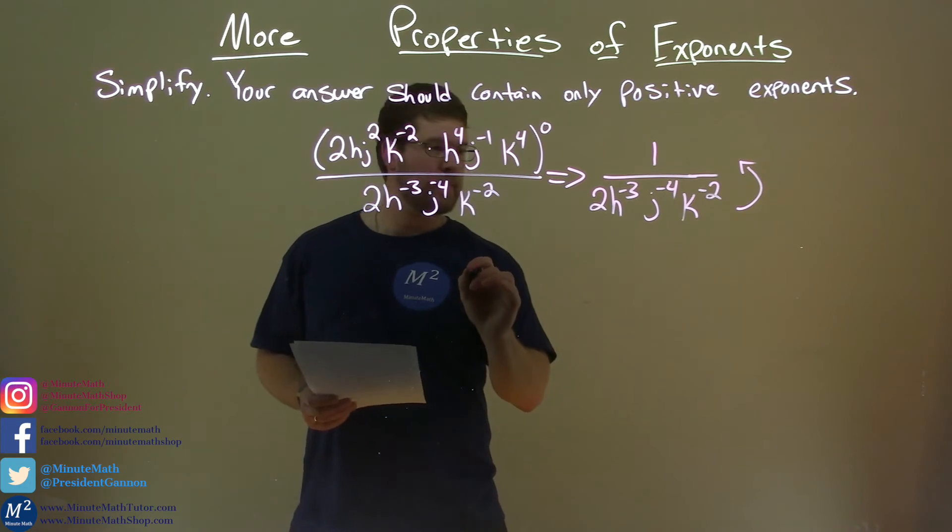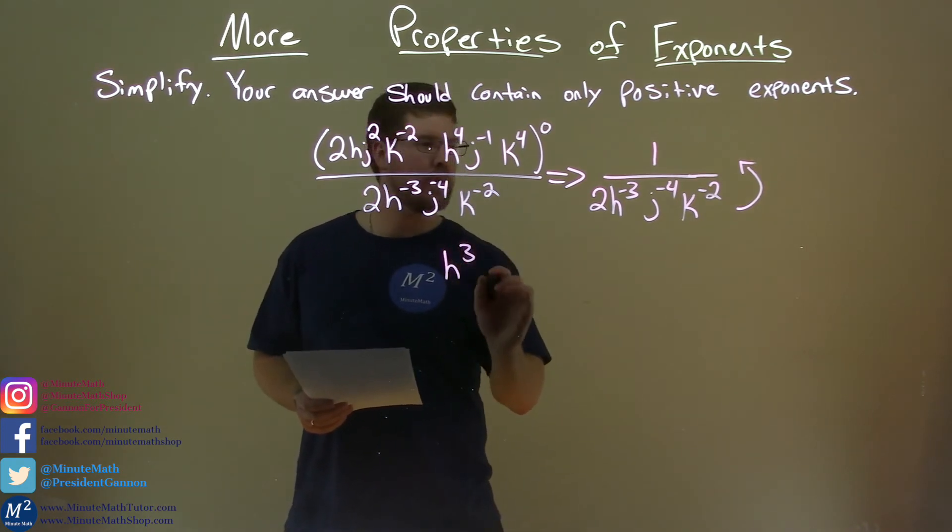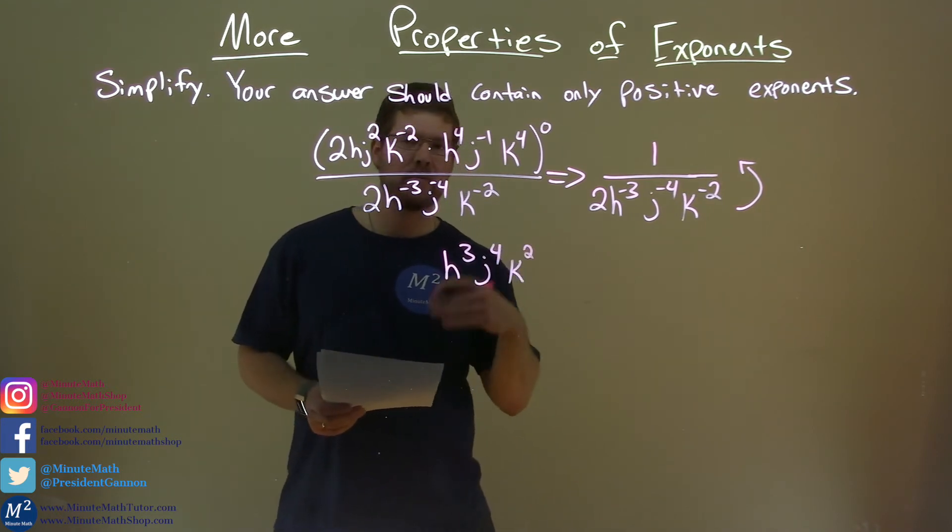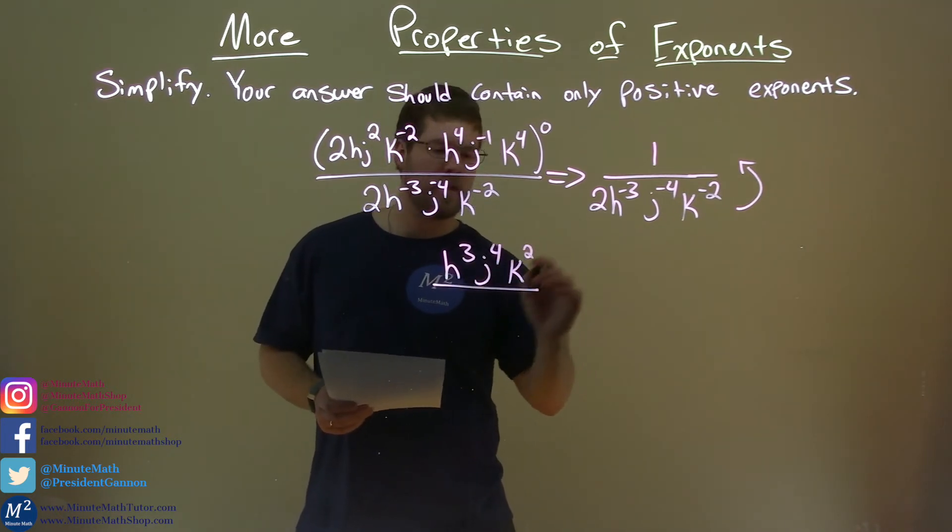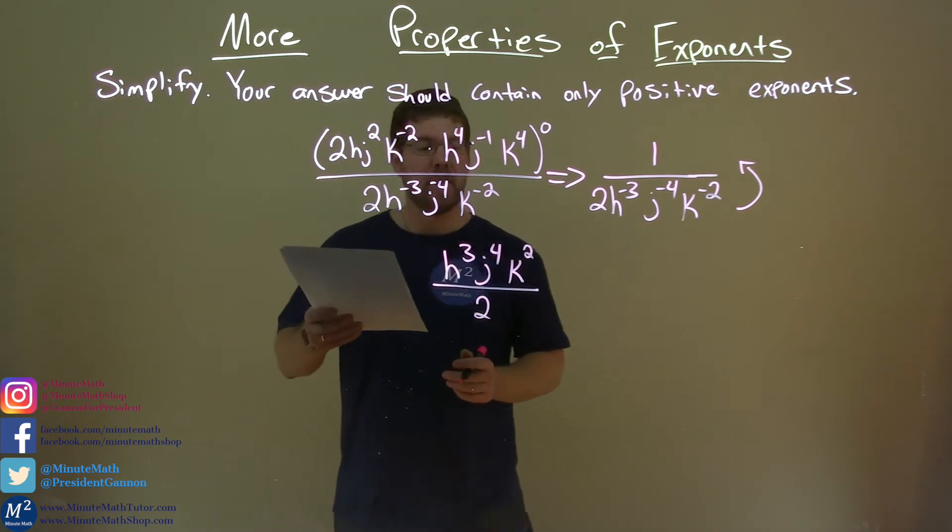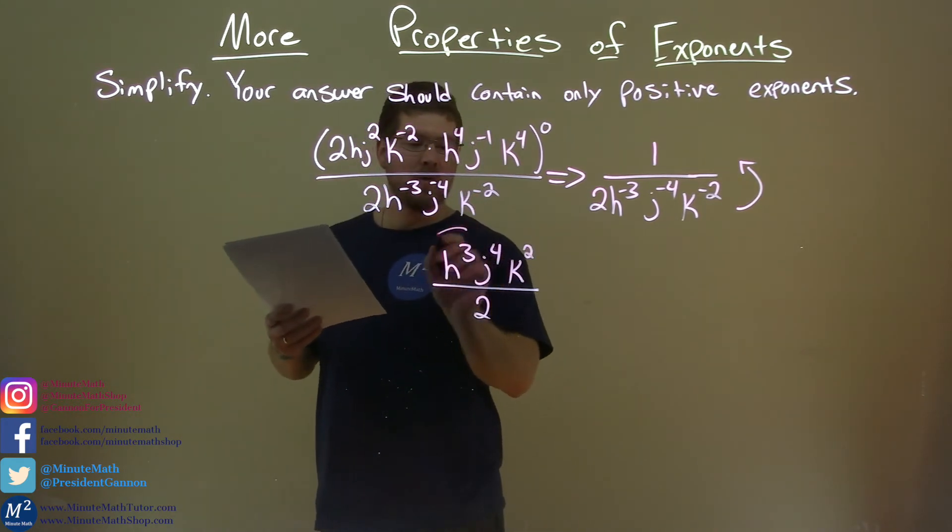So, let's do that right here. Here, we have h to the positive 3rd, j to the 4th, positive 4th power, and k to the positive 2nd power, or squared, all over. Don't forget that 2 that stayed down in the denominator, and now we're done.